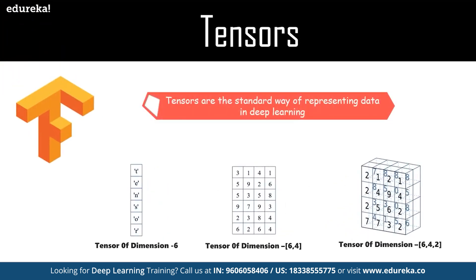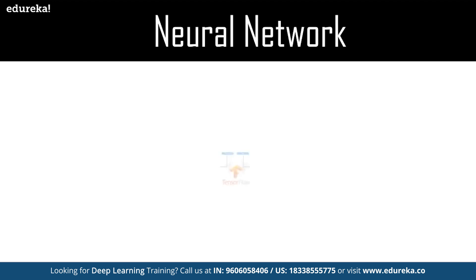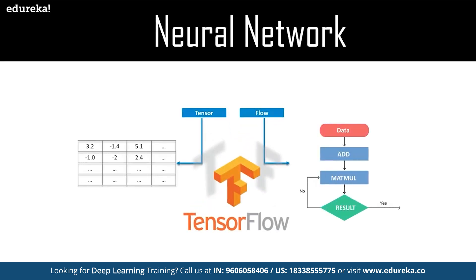TensorFlow's name is directly derived from its core framework — tensors flow through all the computations involved. A tensor is a vector or matrix of n dimensions that represents all data types. All operations are conducted inside a graph — a set of computations that take place successively. Each operation is called an op node, and nodes are connected to each other. This allows developers to create data flow graphs describing how data moves through a series of processing nodes, where each connection or edge between nodes is a multi-dimensional data array, or tensor.